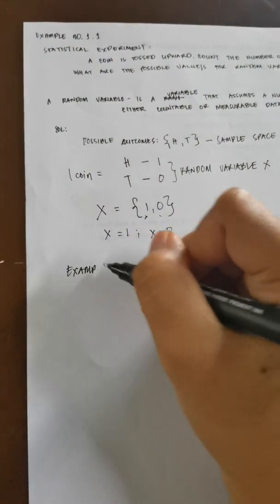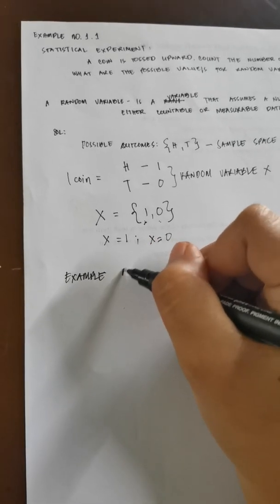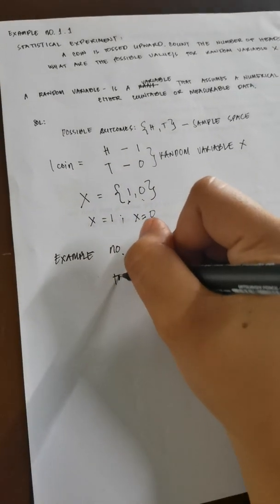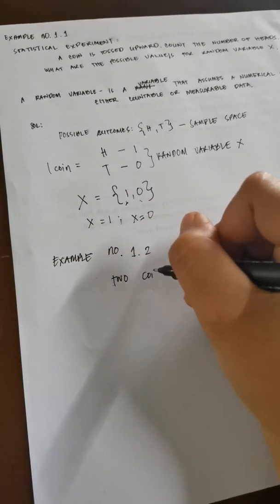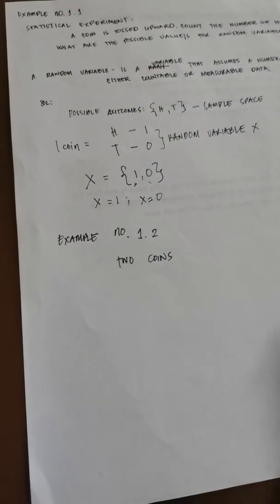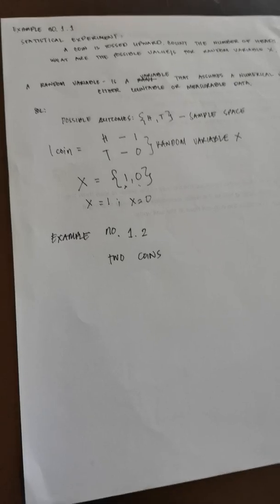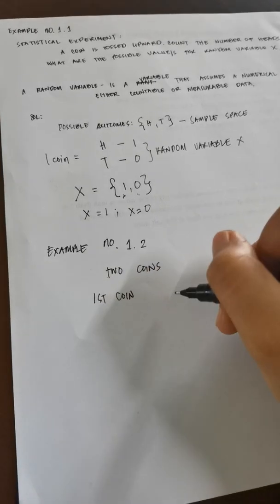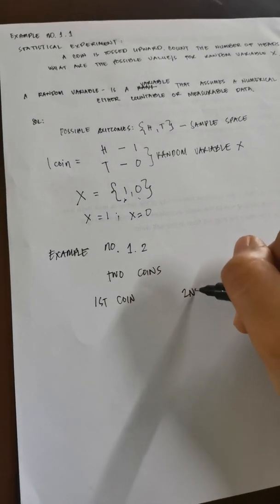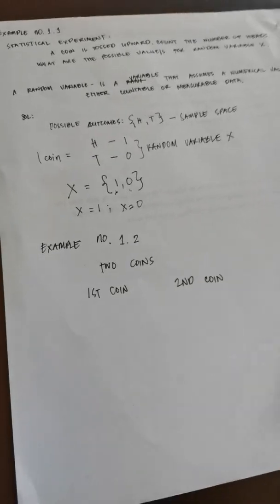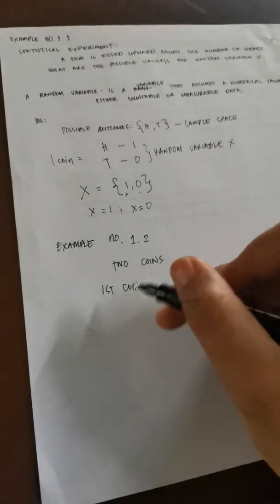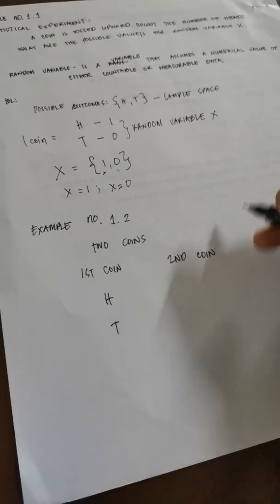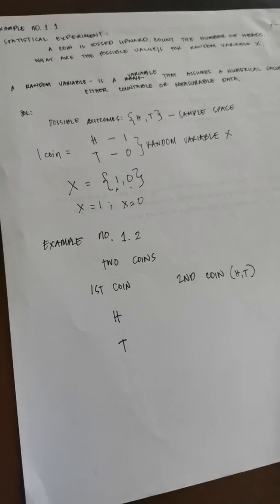What is our example number 2? Example, same situation, but this one, we're going to have 2 coins. How about if it is 2 coins? Still the same, a coin has only 2 results, 2 possible results. That is still, for example, for the first coin, for the first coin, still our result would either be head and tail. For the second coin, that is still head and tail. But, class, we should remember that considering the first coin, the possible, if the result is head, then what is the possible pair of the first coin which is head?